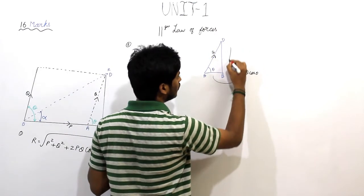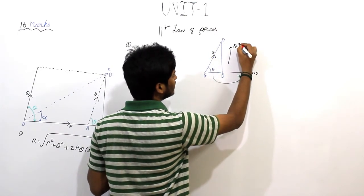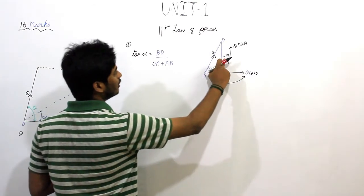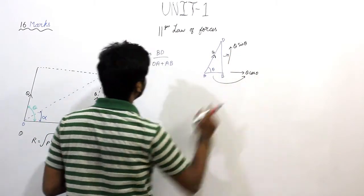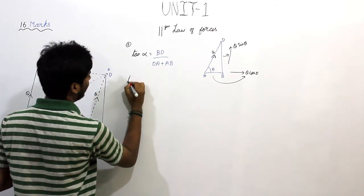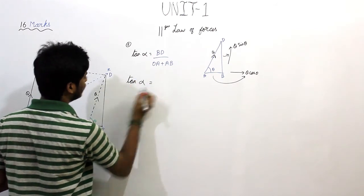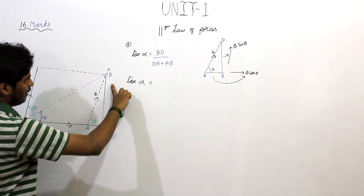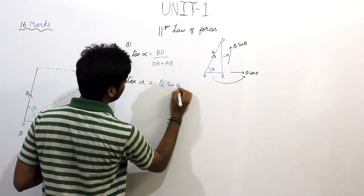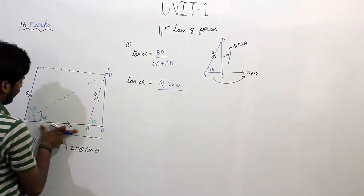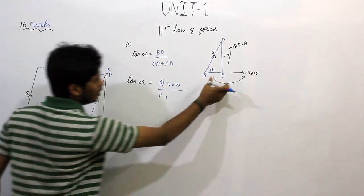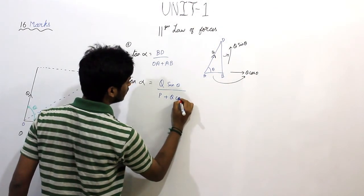It is making angle theta with AB, so the component is Q sin theta. In the length, DB equals Q sin theta and AB equals Q cos theta. We know AB and DB. OA is force P, so the denominator is P plus Q cos theta.